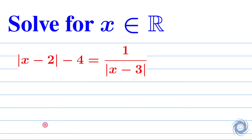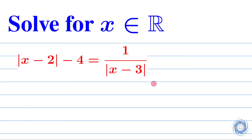Hello everyone. Welcome to the family of atomic mathematics. In this video we are going to solve a problem from algebra. The question is: solve for x belonging to the real numbers, where the equation is given by |x - 2| - 4 = 1 / |x - 3|. So we have to solve this equation for x where x is a real number.